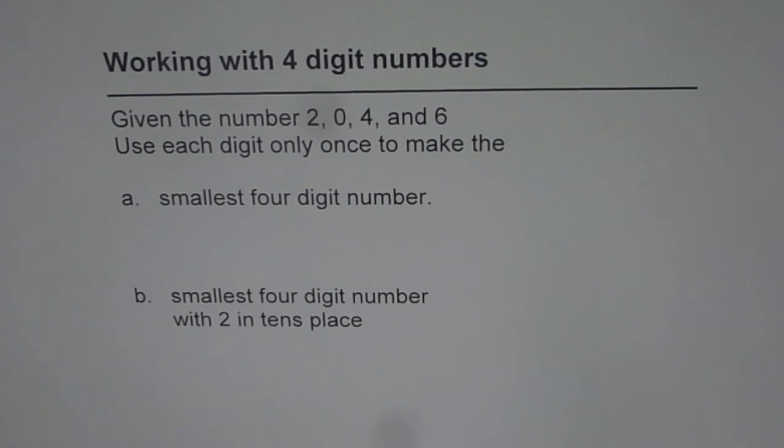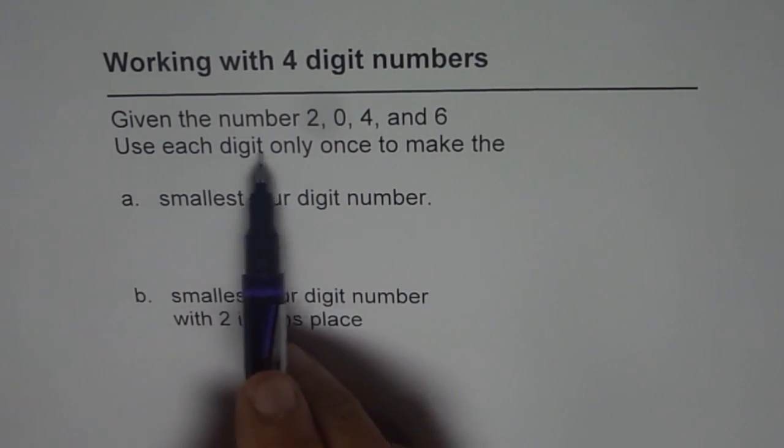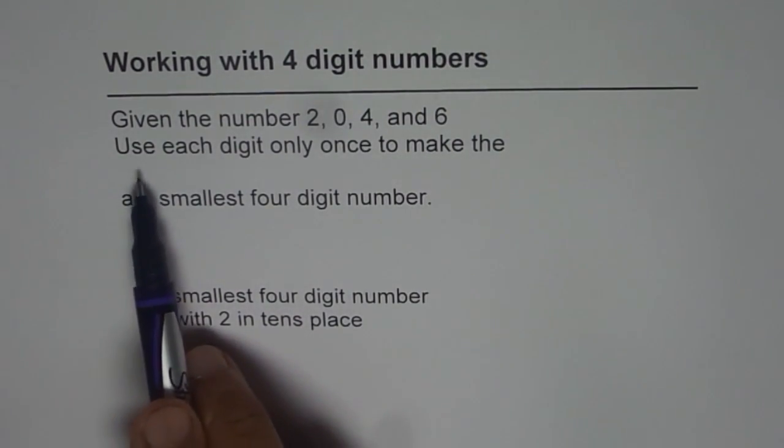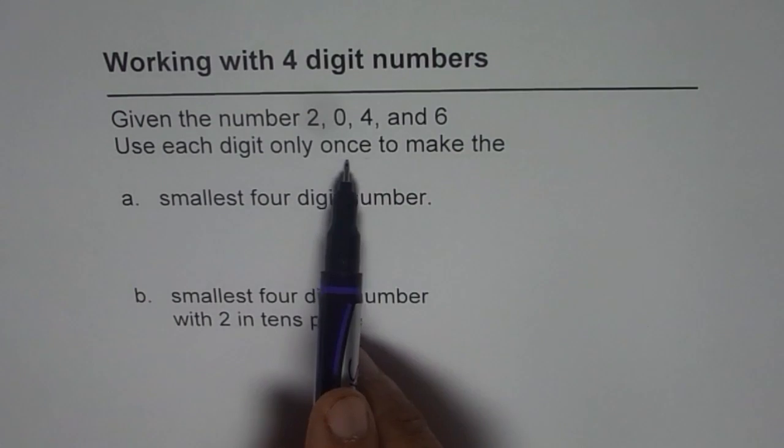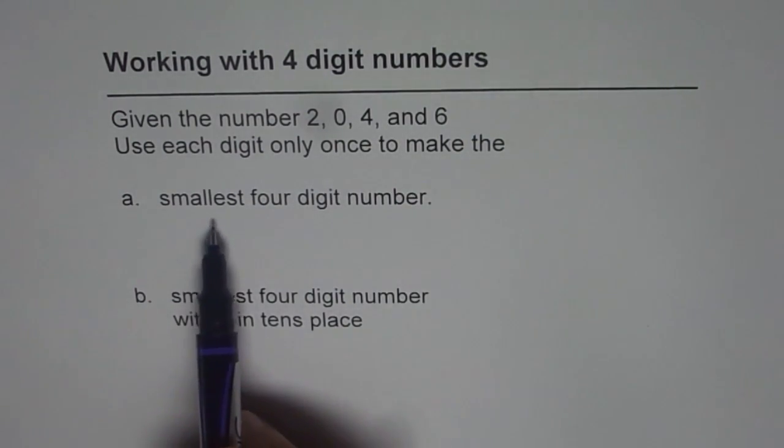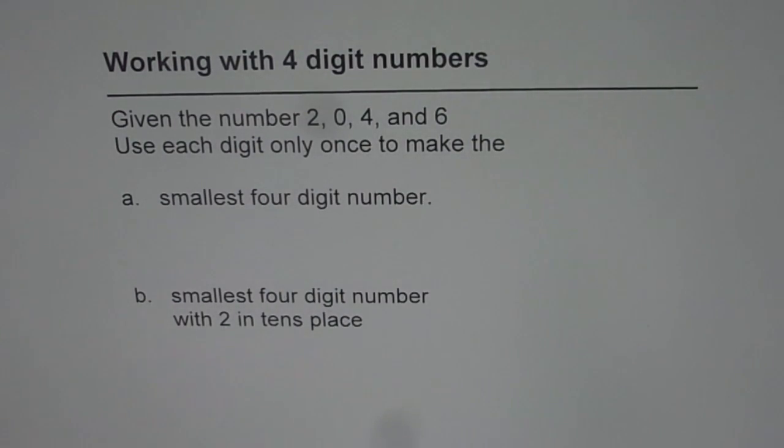Working with four digit numbers, given the number 2, 0, 4, and 6, use each digit only once to make the smallest four digit number. That is the first part. In the second part is smallest four digit number with 2 in tens place. It is kind of tricky. Let us see how to answer these questions.